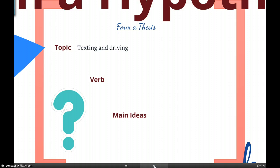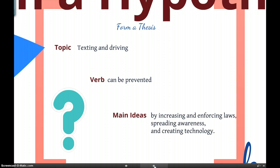So to use this prompt as an example, our topic would be texting and driving. And our verb could be, can be prevented. And the three main ideas I'm going to use, by increasing enforcing laws, spreading awareness, and creating technology.